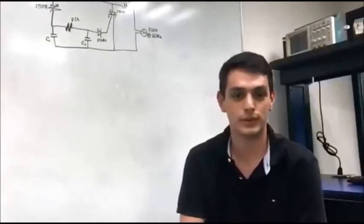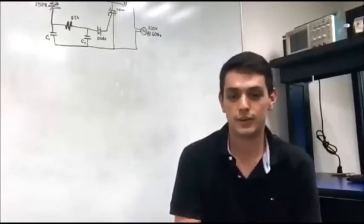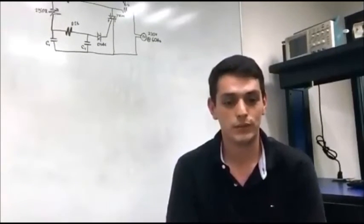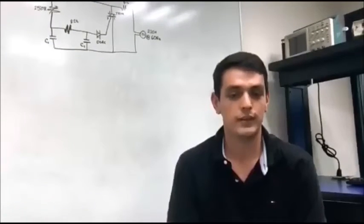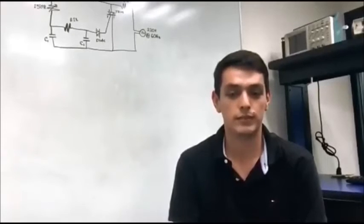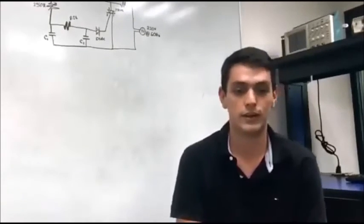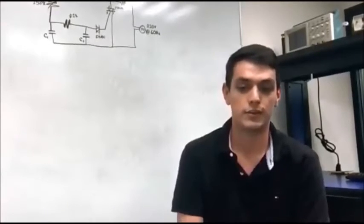DIAC is a diode that conducts electrical current only after its breakover voltage has been reached. DIAC is an acronym for diode for alternating current. When the breakdown occurs, the diode enters a region of negative dynamic resistance, leading to a decrease in the voltage drop across the diode.